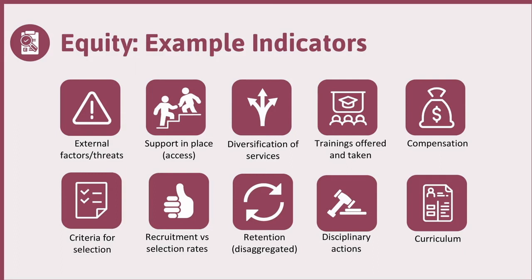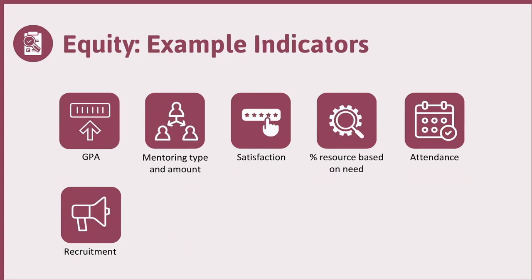These are kind of broad indicators, but there are definitely more specific indicators that you can think about, and you can assign metrics, turning these indicators into metrics specifically for your own project. A few more: GPA, mentoring — the amount and type and who gets it — looking at satisfaction and disaggregating that data, and looking at the percent of resources based on need and attendance to see if there are any differences across various groups.